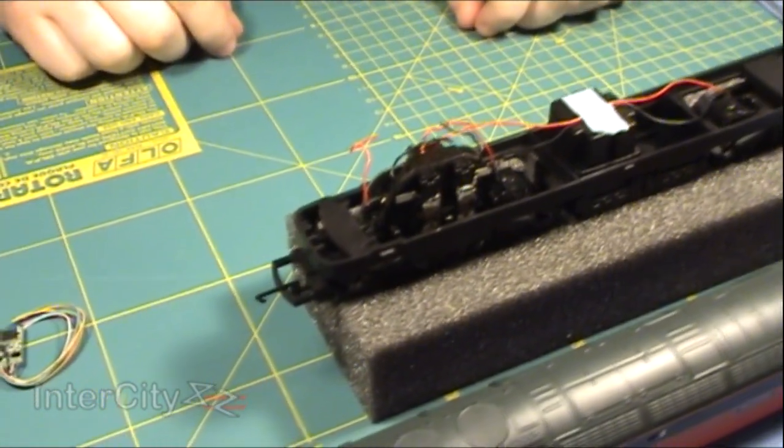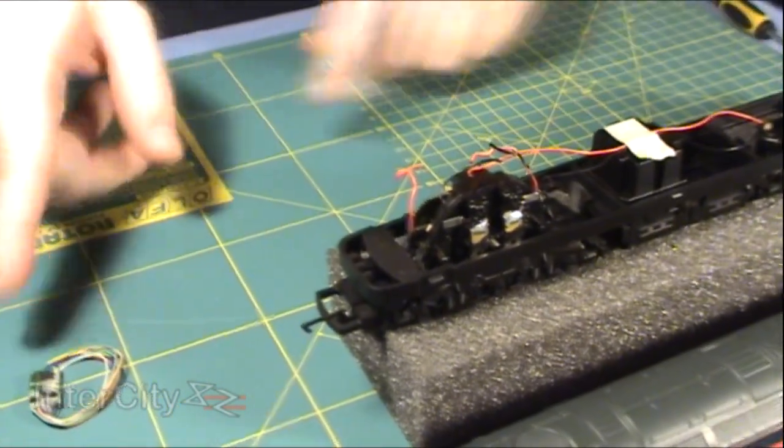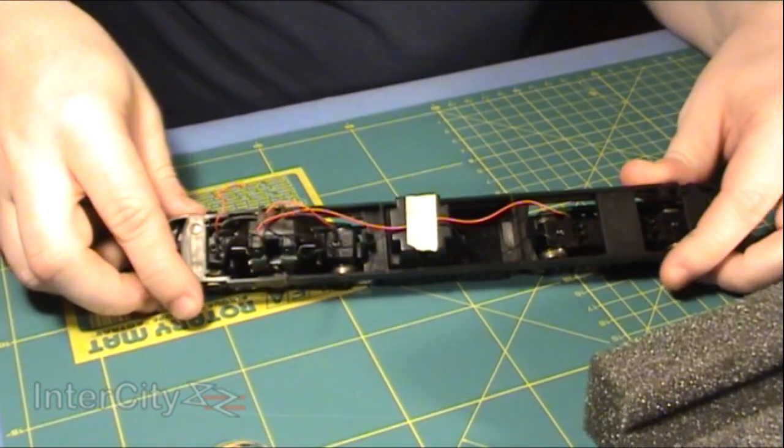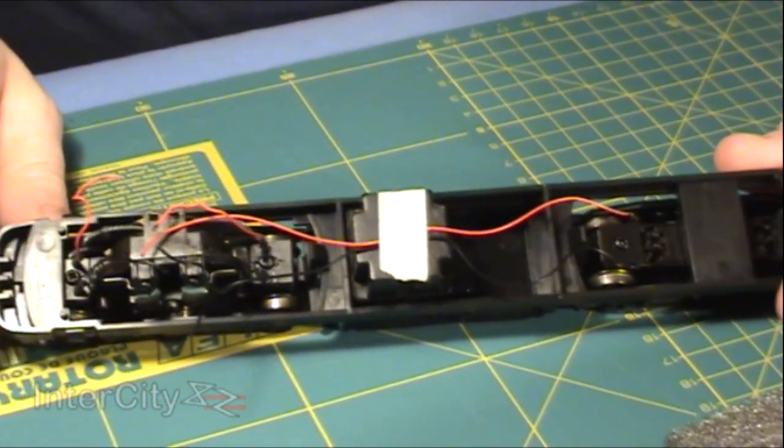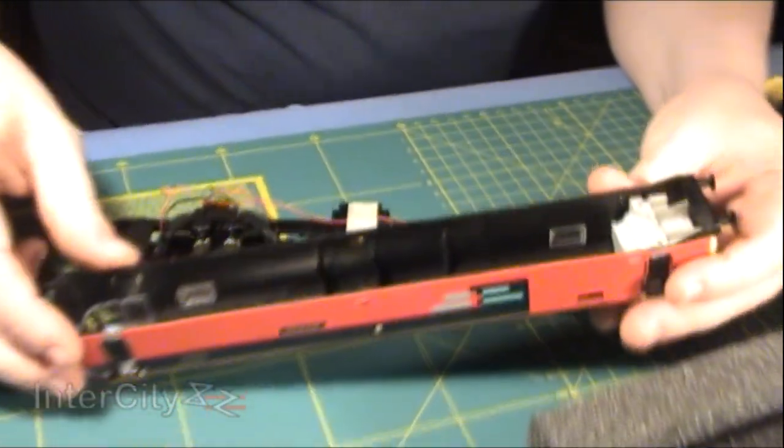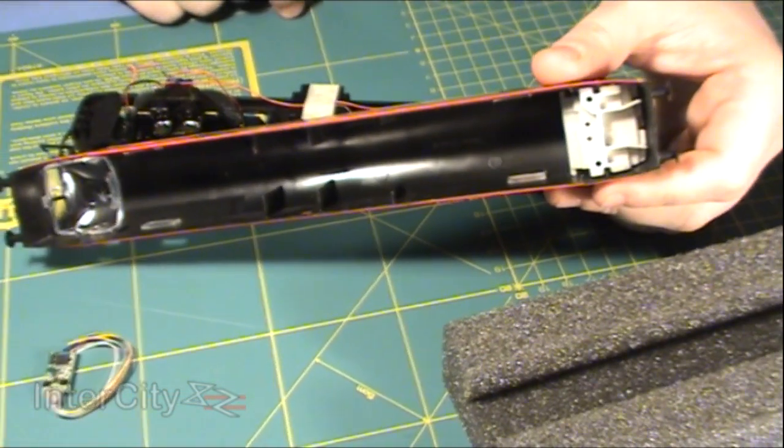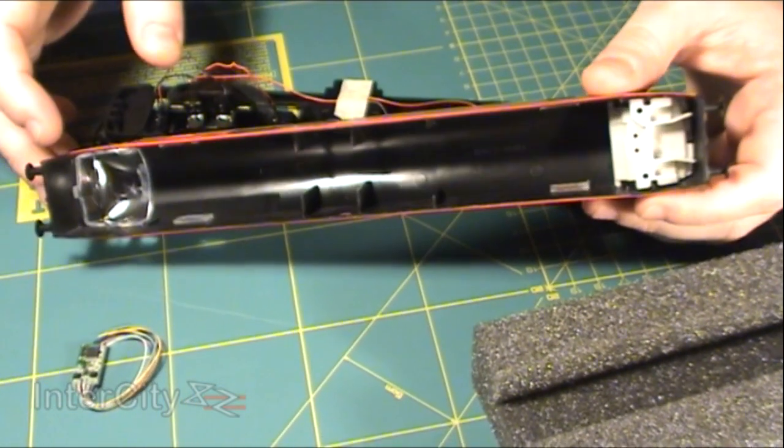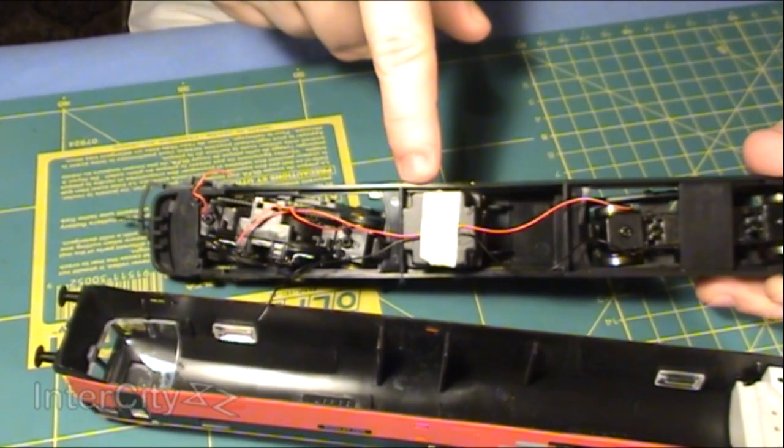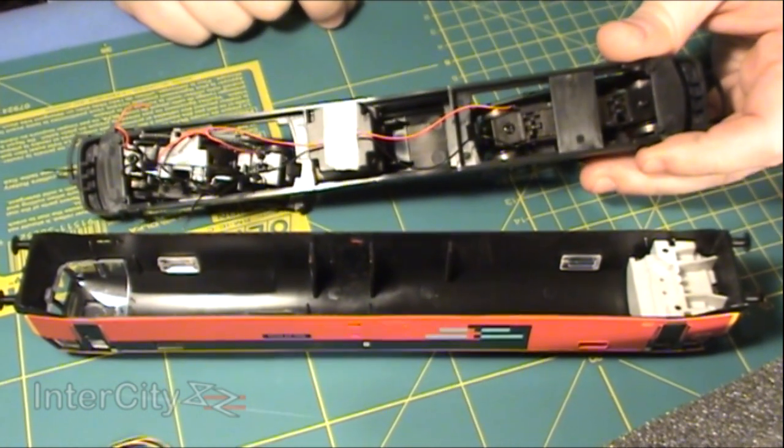So we know how the loco is laid out inside and how the chip needs to be connected. Now we need to think about how we're going to fit everything inside. We need to find a space where the chip can go that won't clash with the inside of the body. As a diesel locomotive, it's easier because you've just got a big empty square space. If we look at the inside, it's actually very nice on this one because the weight sits to one side of this central section and there's a big empty recess there. That's quite a nice little space for us to fit the chip in.